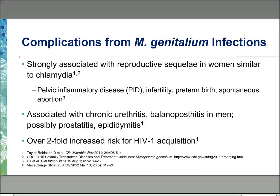There has been increasing data regarding complications from MGEN infections, and this has been a growing field. There is a strong association based on meta-analysis with PID. MGEN has also been associated with infertility, preterm birth, and spontaneous abortion. In men, MGEN has been associated with chronic urethritis, balanoposthitis — inflammation of both the glans and the foreskin — and possibly prostatitis and epididymitis. Studies predominantly in Africa have shown a two-fold independent increased risk of HIV-1 acquisition among women infected with MGEN based on a longitudinal study.